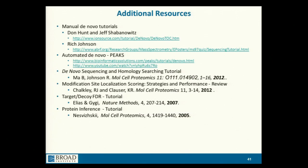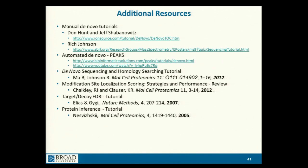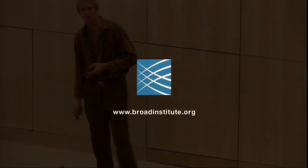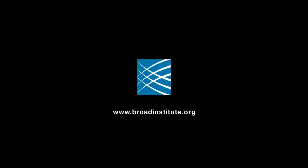I'm going to stop there. What I've tried to do is cover identification of spectra, tell you what information is present, talk about how scoring is done from a peptide-spectrum match, discuss false discovery rates, and explain how you put things back together for proteins. Listed in greater detail are some references you can follow up on, and I'm happy to take any questions.